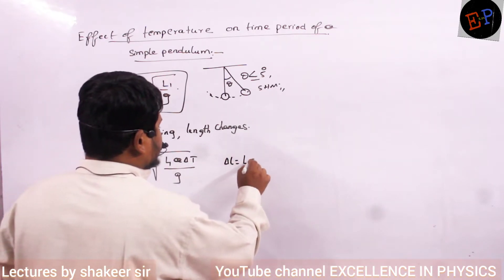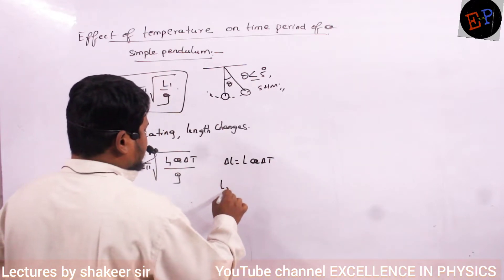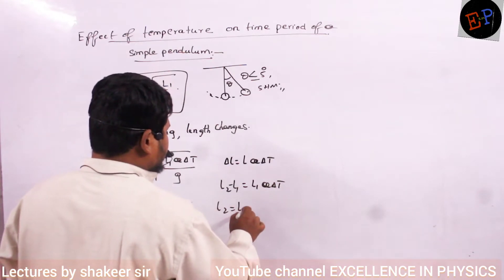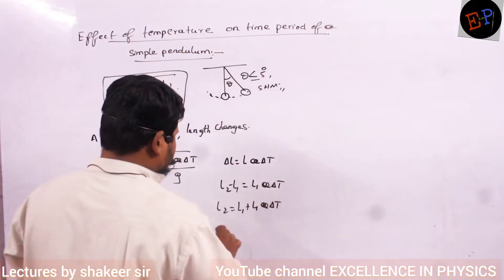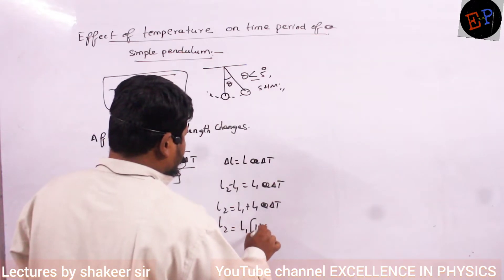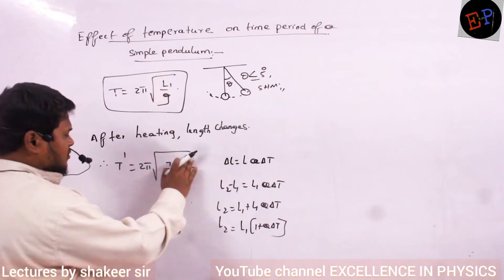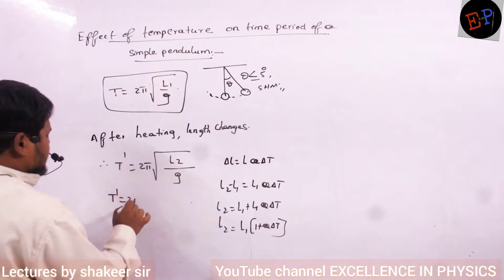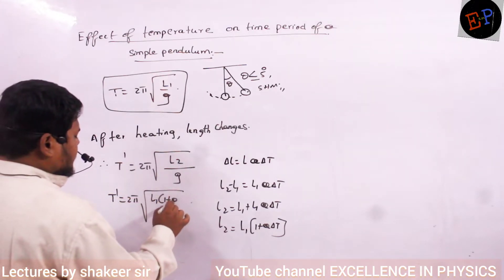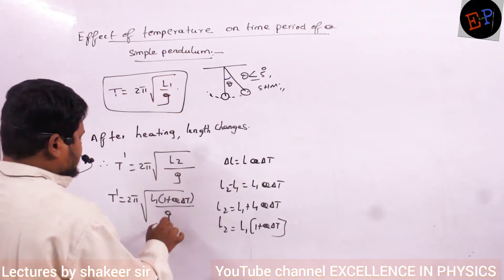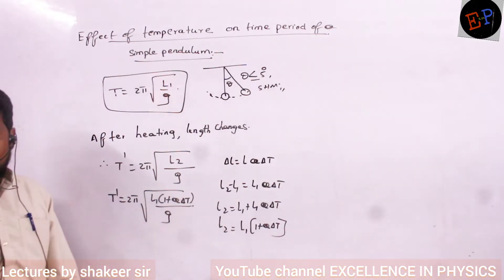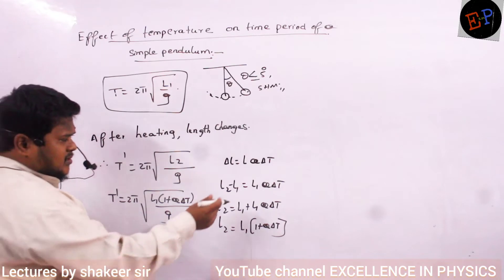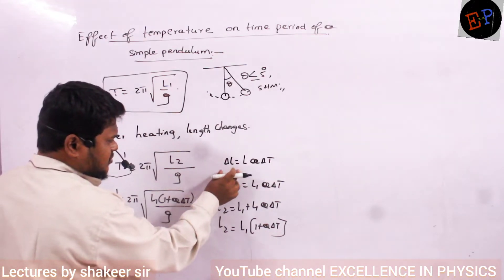Delta L equals L times α times ∆T. Delta L means L2 minus L1, which equals L1 times α times ∆T. So L2 can be written as L1 plus L1·α·∆T, which is L1 into 1 plus α·∆T. So I substitute this final length into T dash: T dash equals 2π times square root of L1 into 1 plus α·∆T.